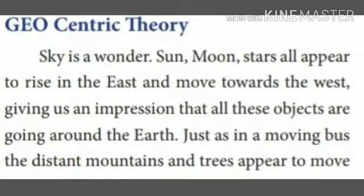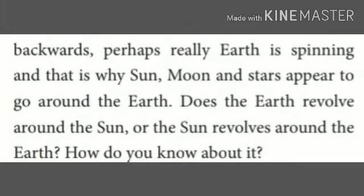Geocentric theory: the sky is a wonder. Sun, moon, stars all appear to rise in the east and move towards the west, giving us an impression that all these objects are going around the earth. Just as in a moving bus, the distant mountains and trees appear to move backwards. Perhaps really the earth is spinning and that is why sun, moon and stars appear to go around the earth. Does the earth revolve around the sun, or the sun revolves around the earth? How do you know about it?